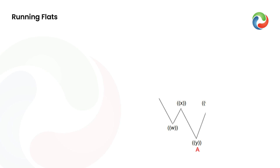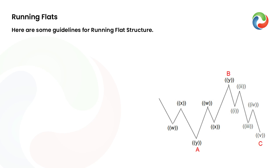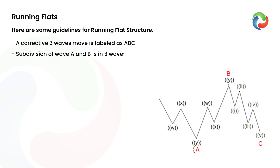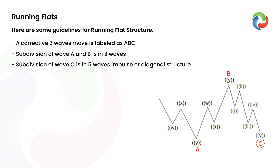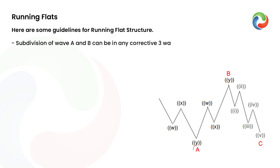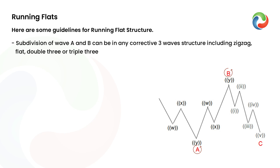Running Flats. Here are some guidelines for running flat structure. A corrective three-wave move is labeled as ABC. Subdivision of wave A and B is in three waves. Subdivision of wave C is in five waves impulse or diagonal structure. Subdivision of wave A and B can be in any corrective three-wave structure, including zigzag, flat, double three, or triple three.